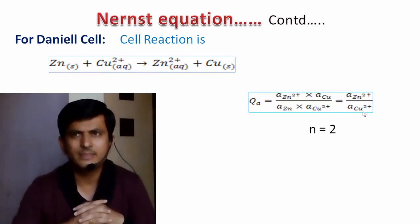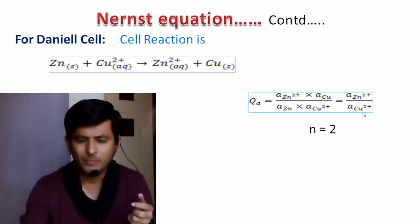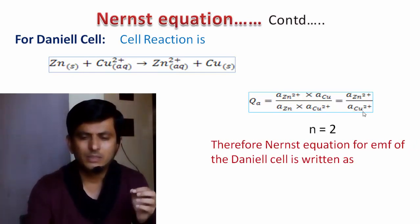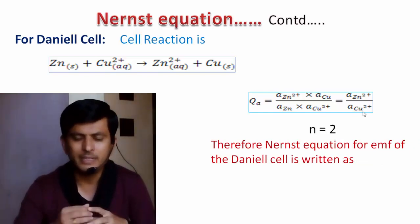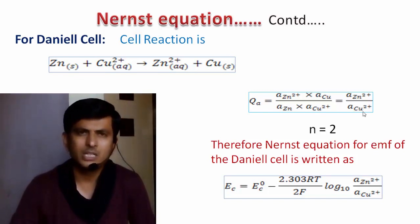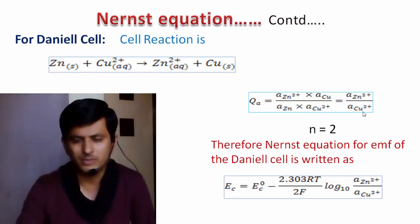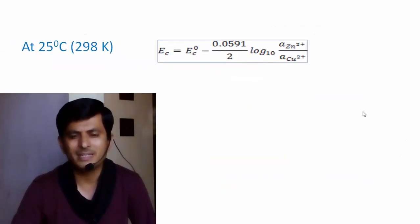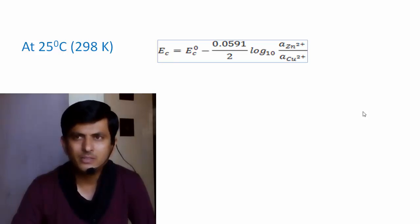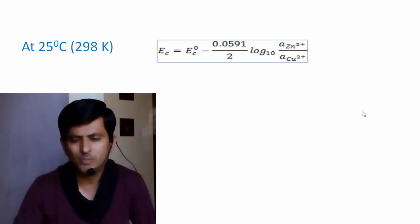In the Daniel's cell reaction, n, the number of electrons involved, is 2. Substituting all values, the Nernst equation for the EMF of Daniel's cell is: EC = E⁰C − (2.303RT / 2F) log₁₀ (activity of Zn²⁺ / activity of Cu²⁺). At 298 K, this becomes: EC = E⁰C − (0.0591 / 2) log₁₀ (activity of Zn²⁺ / activity of Cu²⁺).